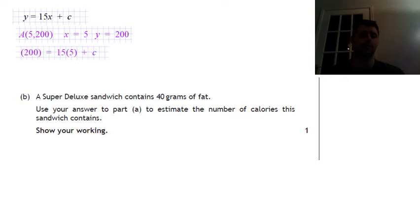So where the x was, I've put 5. Where the y was, I've put 200. That'll give you 75 plus c equals 200. So c is 125. So now we've got the full equation of the line. And the full equation of the line is y equals 15x plus 125.